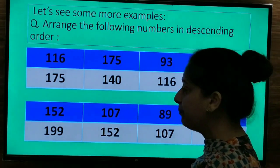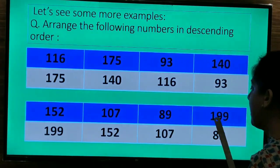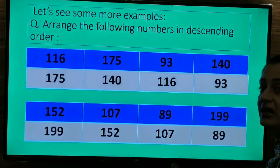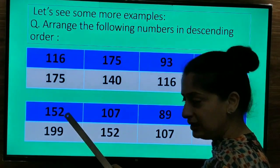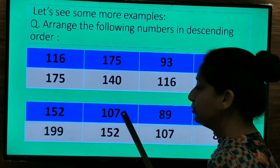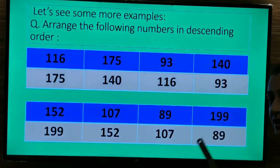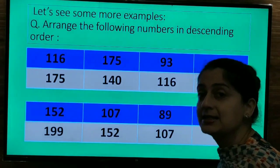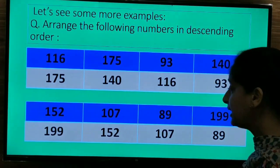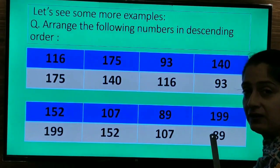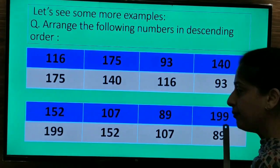Another example 152, 107, 89 and 199. Count the number of digits. 1, 2, 3. 1, 2, 3. 1, 2 and 1, 2, 3. So which number will be smallest? The number with the minimum digits that is 2, that is 89. So we will place 89 in the end because it is the smallest number.